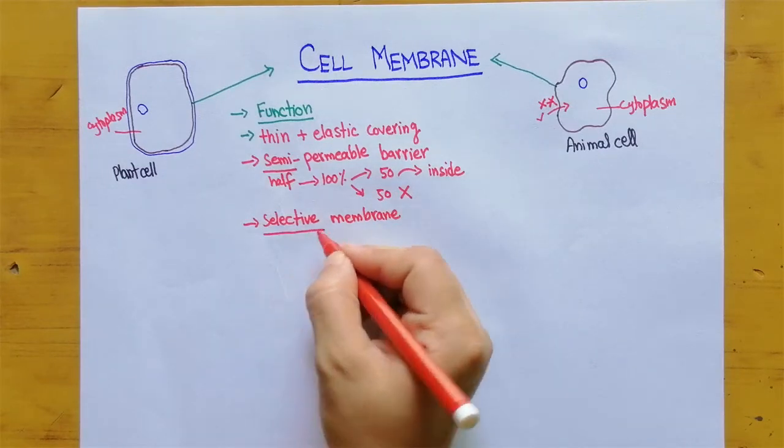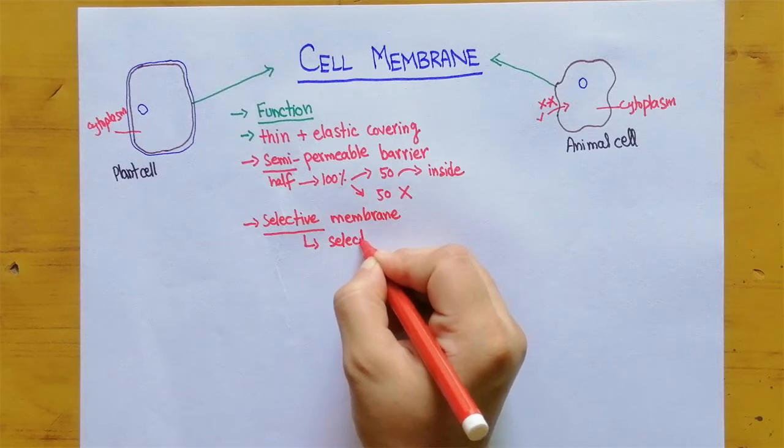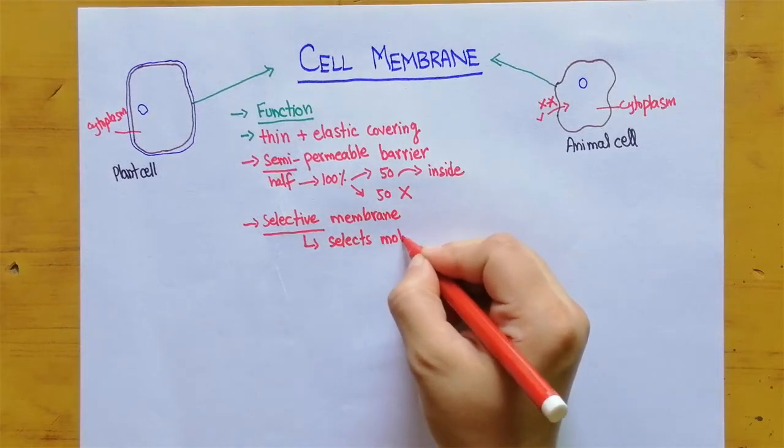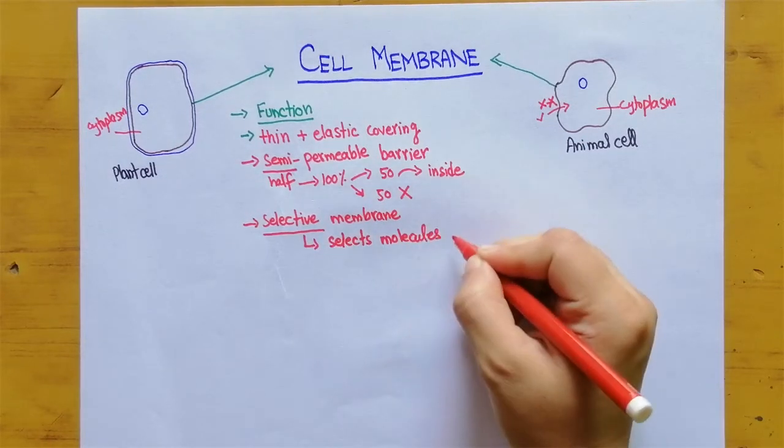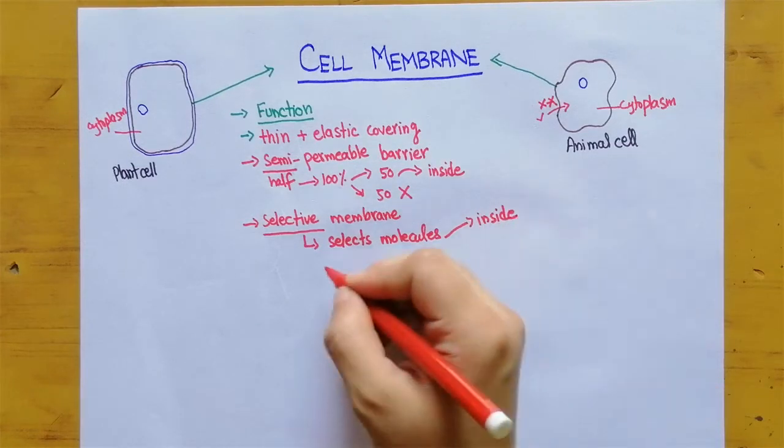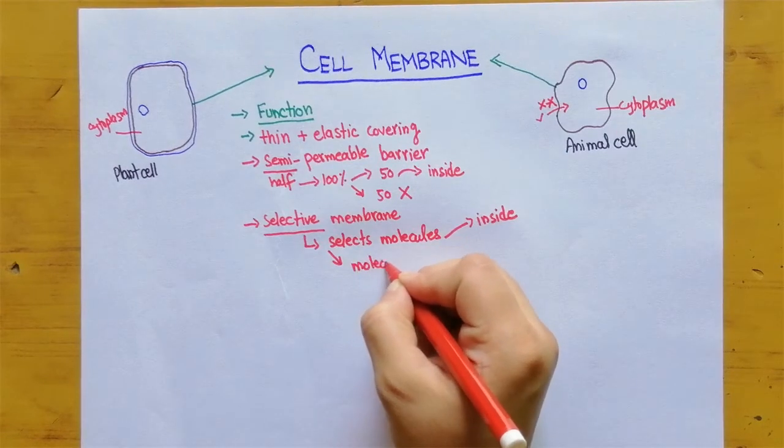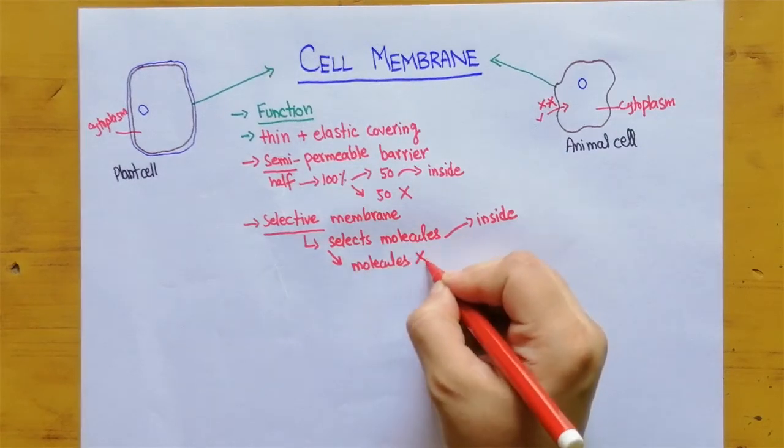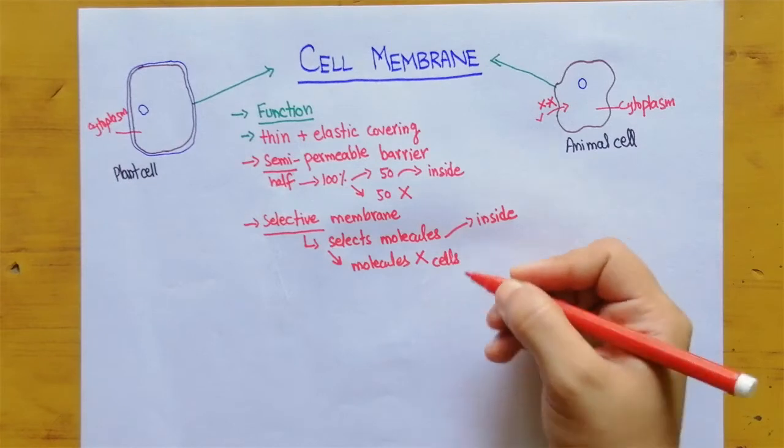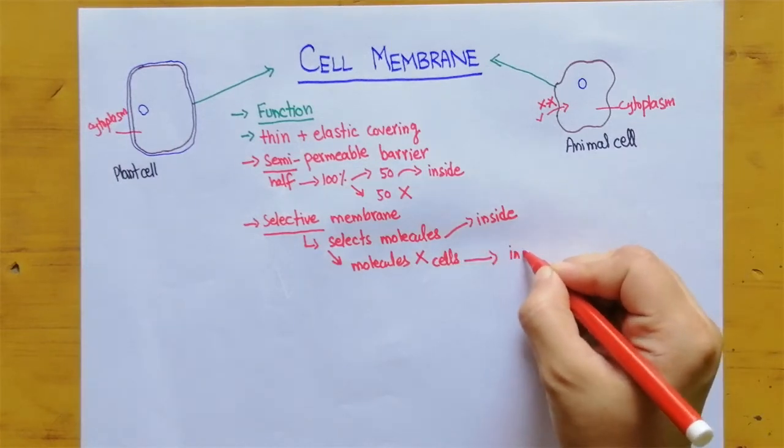Selective membranes mean that it selects the molecules and then let them go inside the cell. For example if there are some molecules not required by the cells or they are dangerous for the cell they cannot go inside.